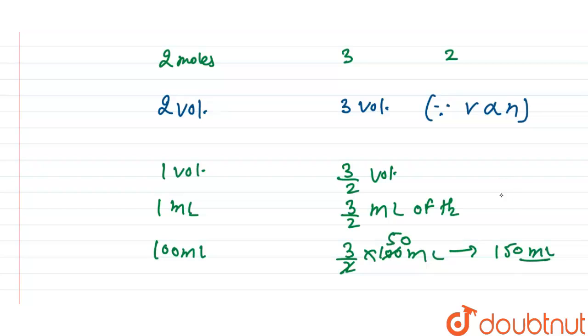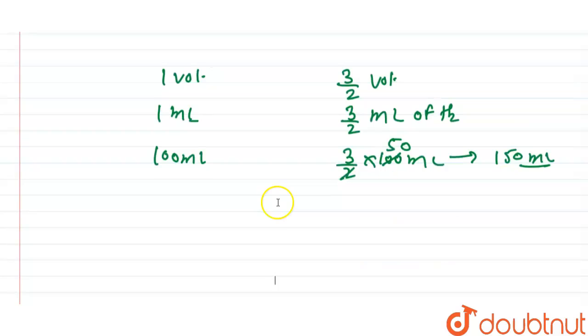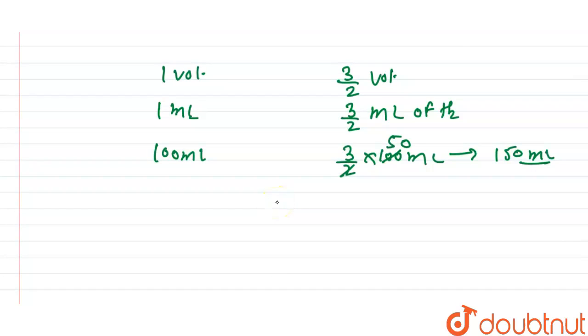So as you can see, 100 mL of PH3 gives 150 mL of H2. So increase...